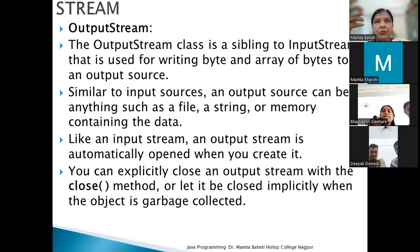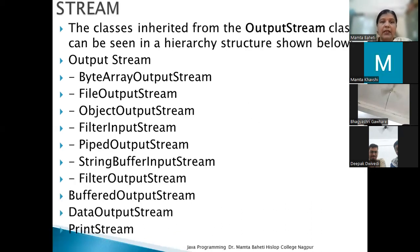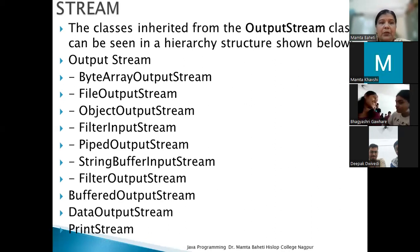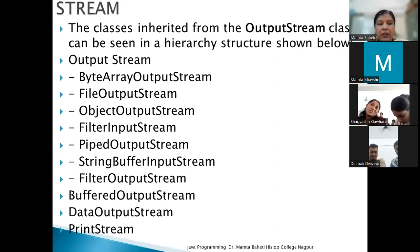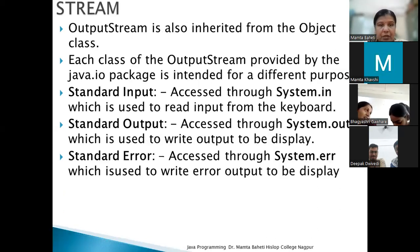First, we open the output stream, then pass the contents to write, and after the work is done, it will be explicitly closed. Like the input stream, the output stream has a hierarchy, including: ByteArrayOutputStream, FileOutputStream, ObjectOutputStream, FilterOutputStream, PipeOutputStream, BufferedOutputStream, PrintStream, and DataOutputStream.